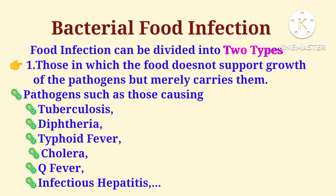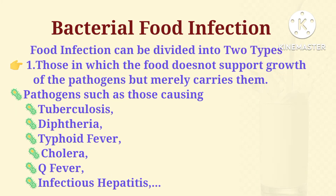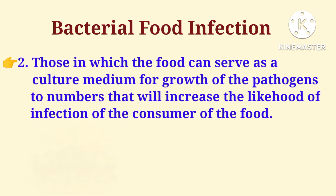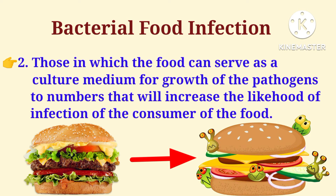The first type includes cases in which the food does not support growth of the pathogens but merely carries them. Pathogens in this category include those causing tuberculosis, diphtheria, typhoid fever, cholera, Q fever, and infectious hepatitis. The second type includes cases in which the food can serve as a culture medium for growth of the pathogens to numbers that increase the likelihood of infection in the consumer.